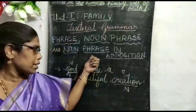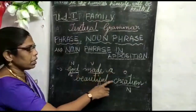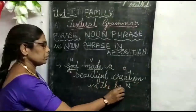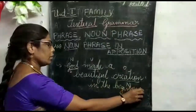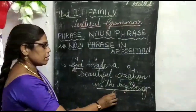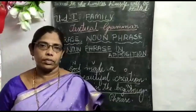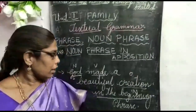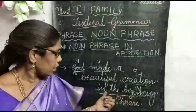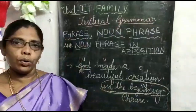Let's move on to the phrase. We'll see a phrase. God made a beautiful creation in the beginning. Here, 'in the beginning' is a phrase. This is a phrase. A phrase is a group of words which does not contain a subject and a predicate. In this group of words — 'in the beginning' — there is no subject and there is no predicate.